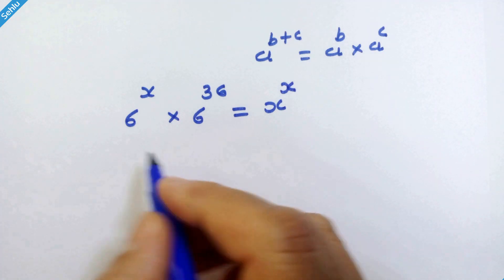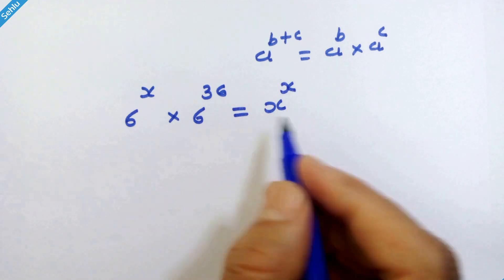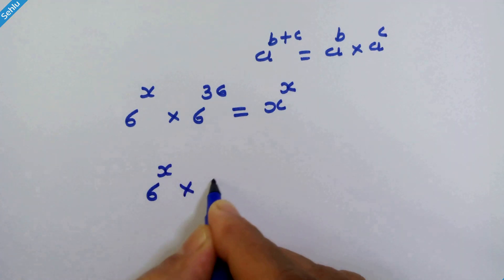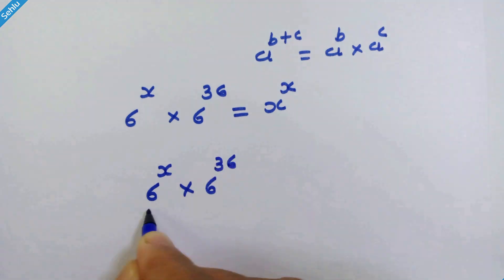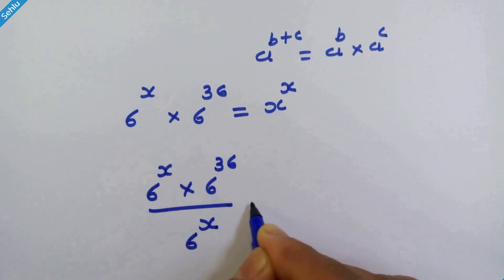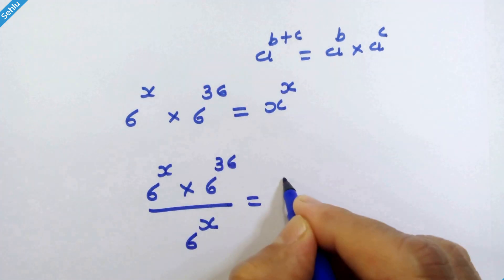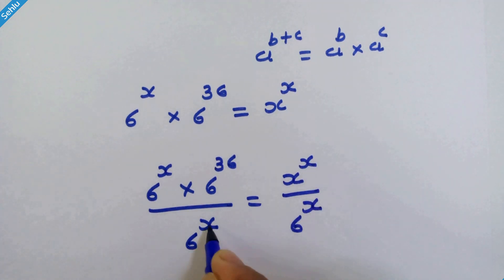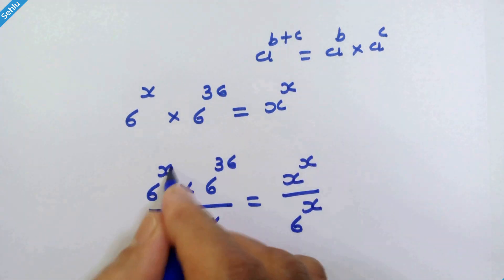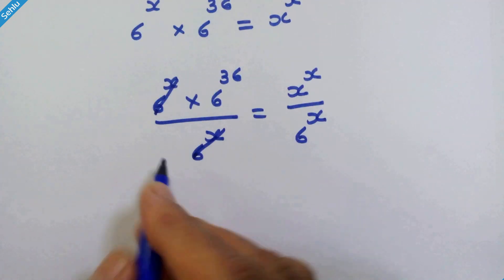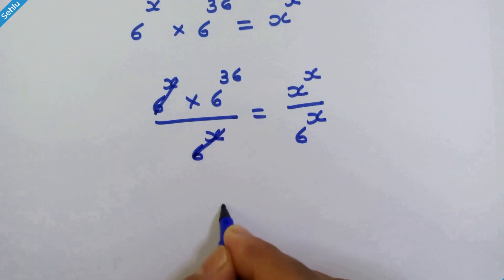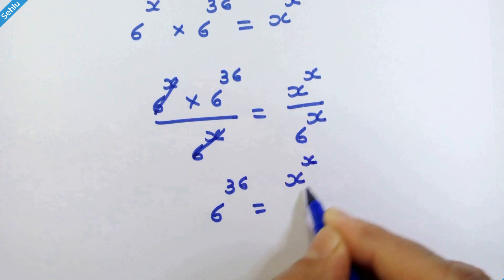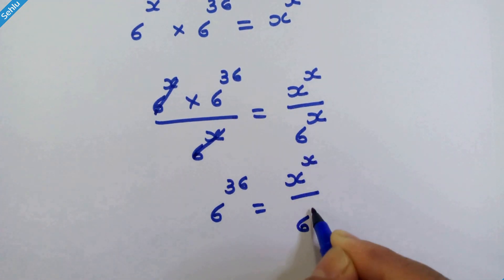Now we will divide by 6 raised to x on both sides. 6 raised to x into 6 raised to 36 upon 6 raised to x is equal to x raised to x upon 6 raised to x. This and this will be cancelled. So it will be 6 raised to 36 is equal to x raised to x upon 6 raised to x.